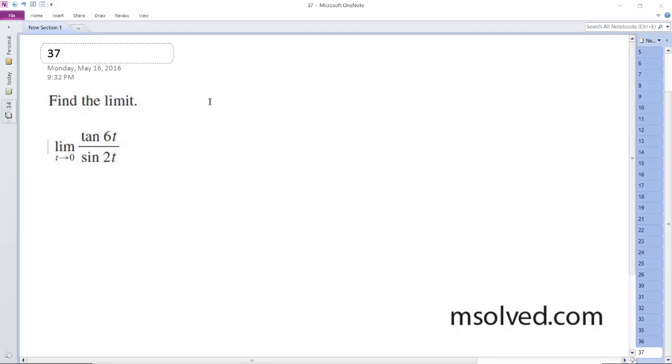All right, let's find the limit of t as it approaches 0 for tangent of 6t over sine of 2t. So what I'm going to do here is I'm going to break this down.